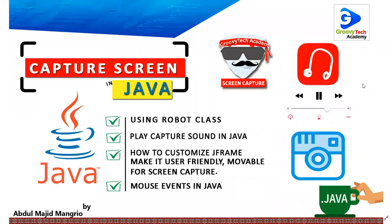Hello everyone, welcome to Groovy Tech Academy. This is your host Abdul Majid Mengliu. Today we are going to learn how to create a screen capture utility in Java using the Robot class. We also have a feature to play a capture sound in Java. We will learn how to customize JFrame, make it user-friendly and movable, and finally we will learn about mouse events in Java. So this will be our logo — let's get started.